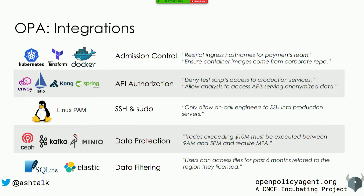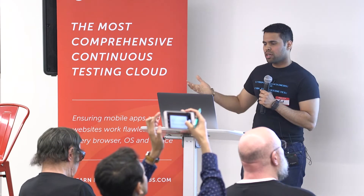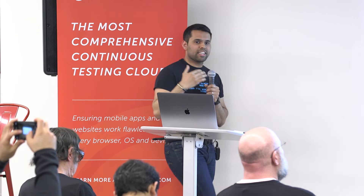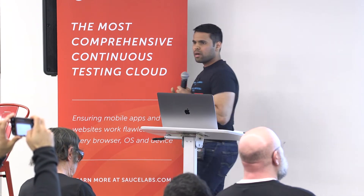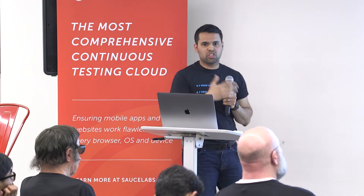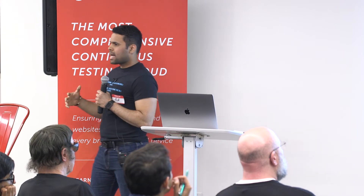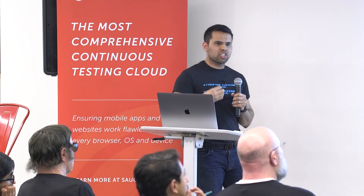OPA is integrated with a bunch of open source projects. One of the hottest use cases right now is admission control in Kubernetes — for example, don't allow images to be pulled from external repositories. You can also integrate OPA with Terraform to test changes before they are made, like a unit test for Terraform. With OPA and Docker, you can prevent users from running insecure containers. OPA is also integrated with service mesh projects like Envoy and Istio for API authorization. With OPA and Linux PAM, you can have fine-grained authorization over SSH and sudo.